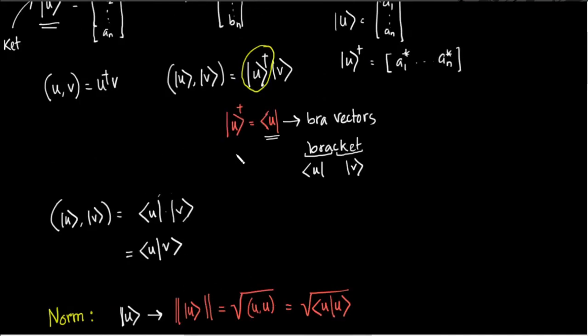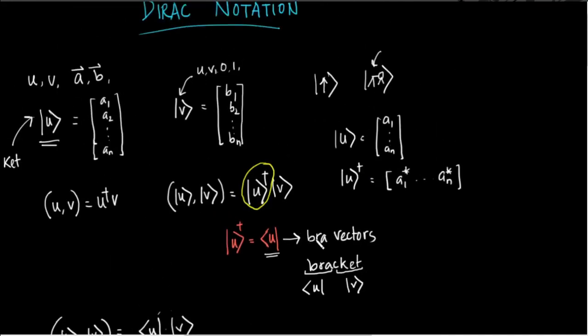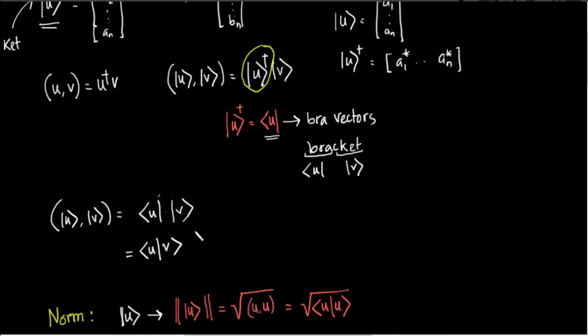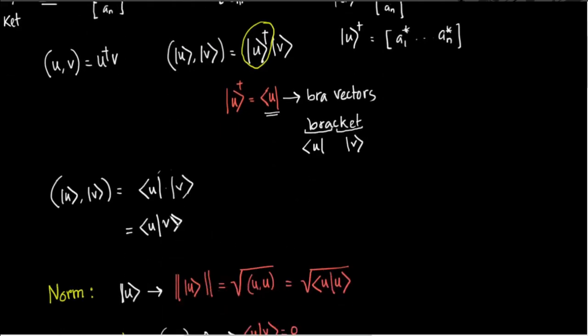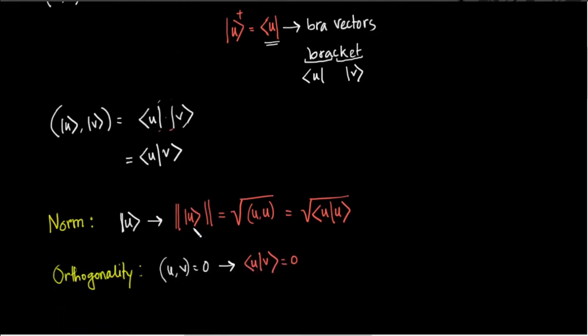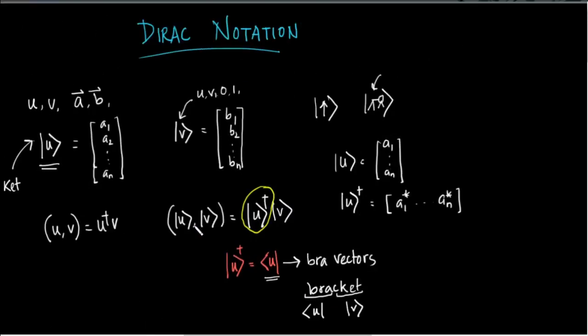So that's about it about Dirac notation. We will write column vectors using kets, we will write row vectors using bras, and we will write inner products using only one vertical slash instead of using two, just for notational convenience and for condensing our notation so that it doesn't take too much space.